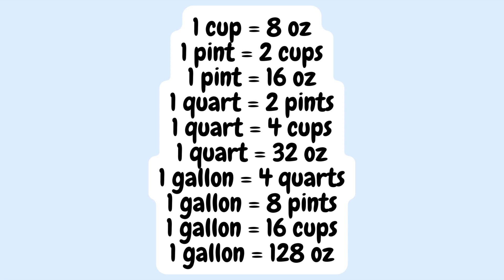In all, we learned that one cup equals eight ounces; one pint equals two cups; one pint equals sixteen ounces; one quart equals two pints; one quart equals four cups; one quart equals thirty-two ounces; one gallon equals four quarts; one gallon equals eight pints; one gallon equals sixteen cups; and finally, one gallon equals one hundred twenty-eight ounces.